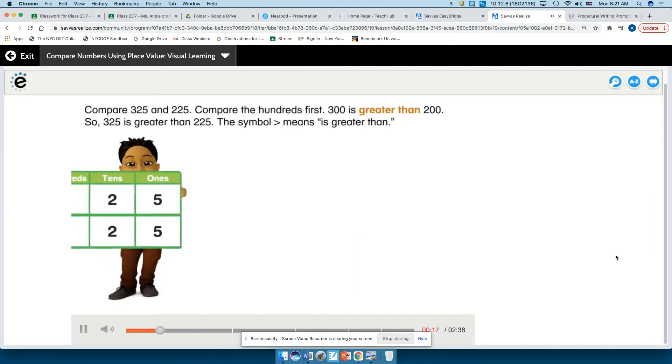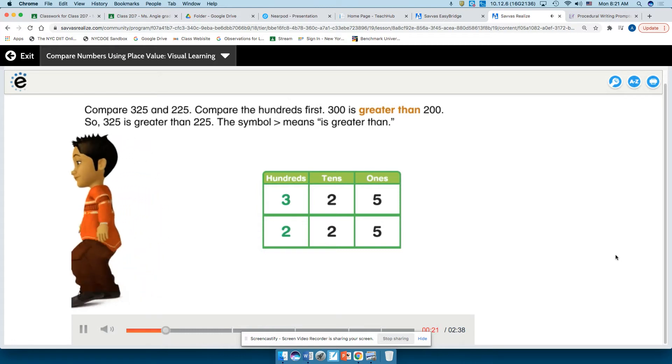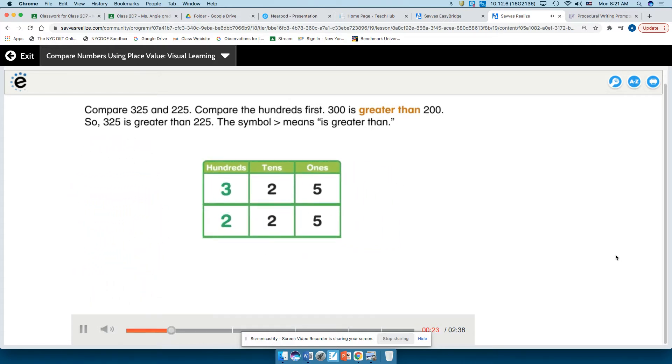Compare 325 and 225. Compare the hundreds first. 300 is greater than 200, so 325 is greater than 225. The symbol means is greater than.